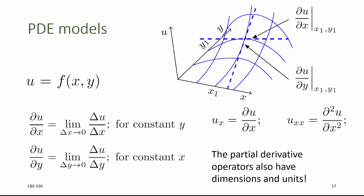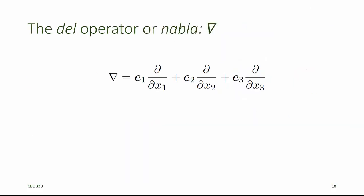These partial derivative operators also have dimensions and units, just like the total derivative operators do. We'll find that the equations used for modeling chemical and biological phenomena in three dimensions can often be simplified by using the del operator, or the symbol called nabla. The del operator is a vector. It's the sum of the three partial derivatives with respect to the three coordinate dimensions, each multiplied by the unit vector in that direction. The unit vectors are annotated by e1, e2, and e3.